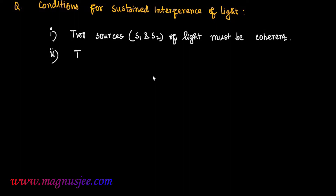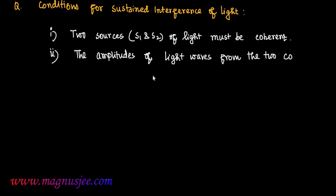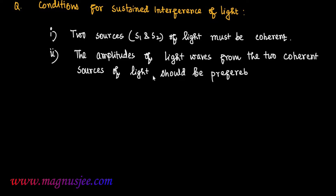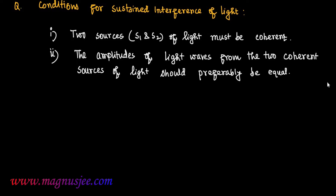Number two condition for sustained interference of light is the amplitudes of two interfering light waves. The amplitudes of light waves from the two coherent sources S1 and S2 should be preferably equal.